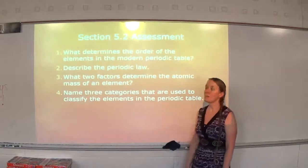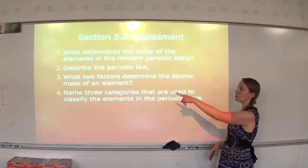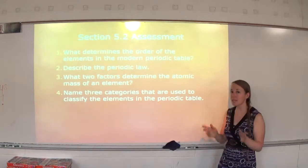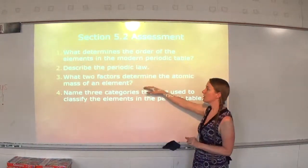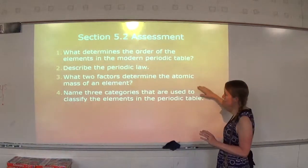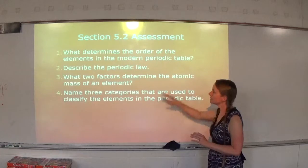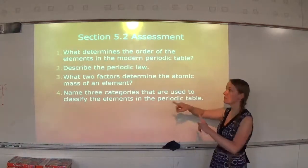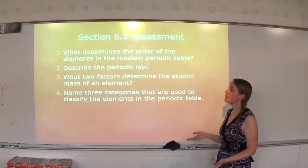Number two: describe periodic law. Periodic law states that as you move across the periods or across the rows, there is a repeating pattern of properties. Across a row, it's not similar properties — there is a repeating pattern. We get a pattern in one row, we see the same pattern on the next row, and the same pattern on the row after. Periodic law says as we move across the periods or the rows, there is a repeating pattern of properties.